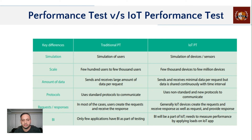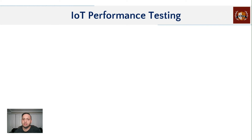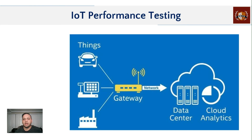So how do we actually performance test IoT? Let's look at some approaches. Before we start, let's understand the infrastructure behind the scenes. For simplicity, we can divide this into three segments: the first is where actual data is created and sensors are located; the second is the gateway, which bridges sensors to the cloud; and the third is the cloud where most functionality and analytics reside.